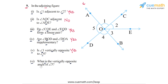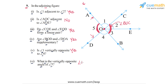Finally, question six asks: what is the vertically opposite angle of angle five? Angle five is formed between lines AOB and COD at intersection point O. The vertically opposite angle to angle five is the whole angle on the other side, which is angle two plus angle three, or angle BOC. So the answer for question six is BOC — or COB — is the vertically opposite angle to angle five.